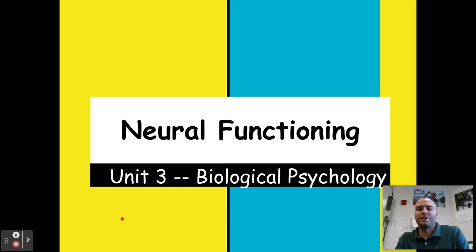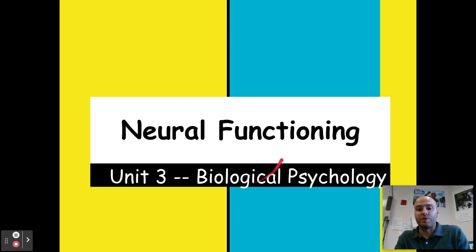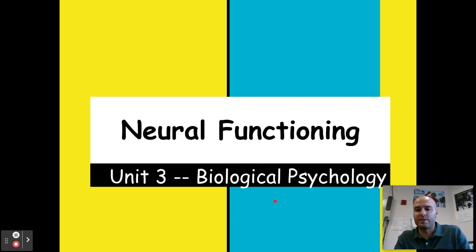Hello, and welcome back to our first notes section on unit three, biological psychology. We just finished up units one and two of history, approaches, and research, which we're going to use going forward. We'll talk about some of those approaches in biological psych: evolutionary, biopsychosocial, the biological perspective, even a little bit of behavioral genetics. It's good to have a foundation from units one and two.